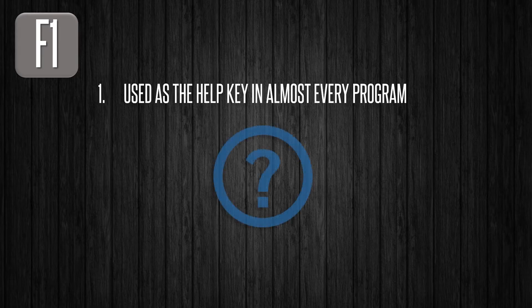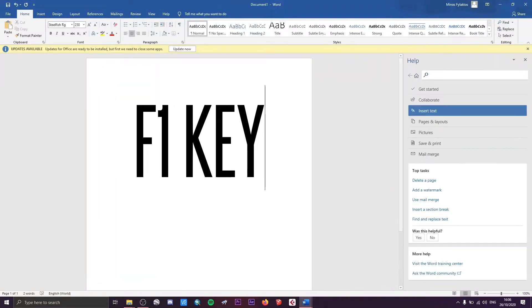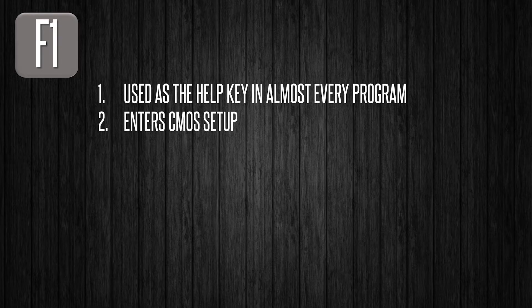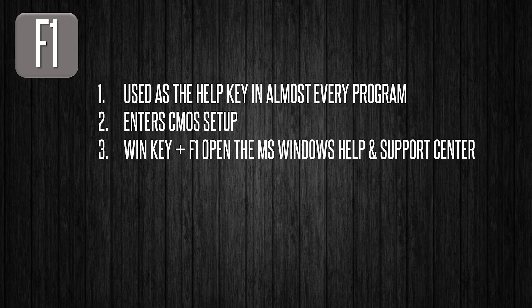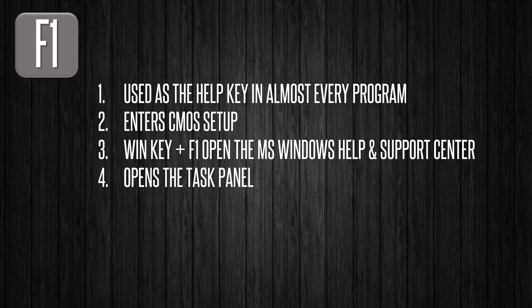So let's begin with F1. The F1 button, used as the help key in almost every program, opens a help screen when pressed. It also enters the CMOS Setup. In addition, F1 along with the Windows key would open the Microsoft Windows Help and Support Center. It also opens the Task Panel.